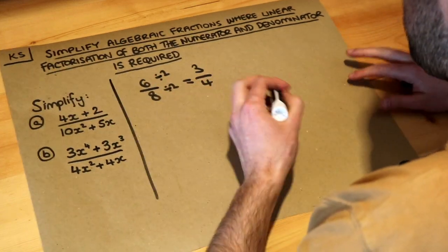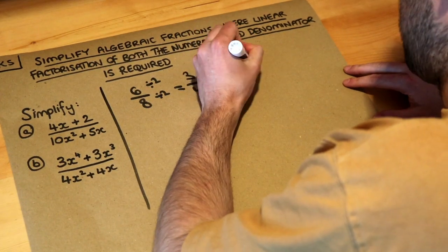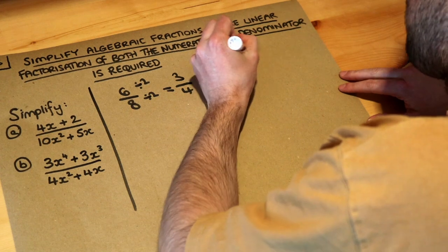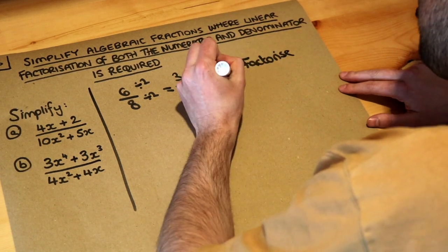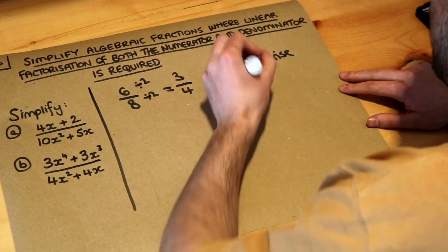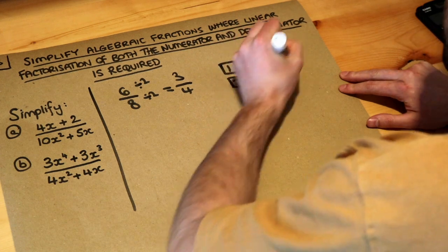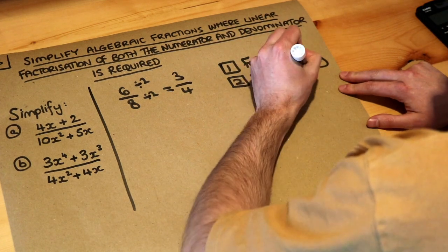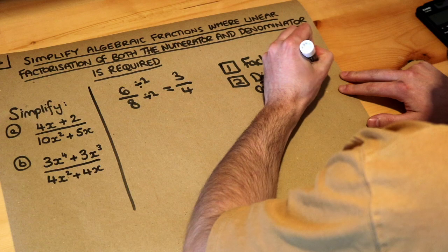Now for algebraic fractions, it's the same method but you might need to factorize first. So the first step is to factorize, and the second step is to divide by any common factors. Hopefully this will become clearer when I actually do some examples.